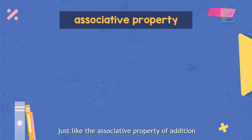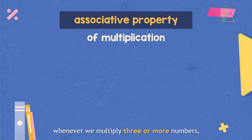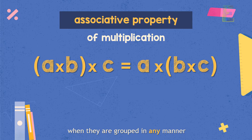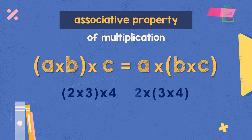Just like the associative property of addition, the associative property of multiplication states that whenever we multiply 3 or more numbers, the value of the product remains the same when they are grouped in any manner. For example, to multiply 2 times 3 times 4, we can group 2 times 3 first and then multiply by 4, or group 3 times 4 first and then multiply by 2. Both will result in a product of 24.